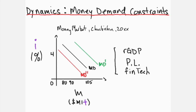The conditions affecting money demand are: one, quantity of real GDP in the economy; two, the general level of prices; and three, the degree of adoption of financial technology. Money demand increases with real GDP because as more goods and services are bought and sold, more money is required to meet the increase in value of total transactions. This shifts the curve rightward from MD to MD', with quantity demanded increasing at all interest rates — for example, from 90 to 105 units of M1+ at four percent.